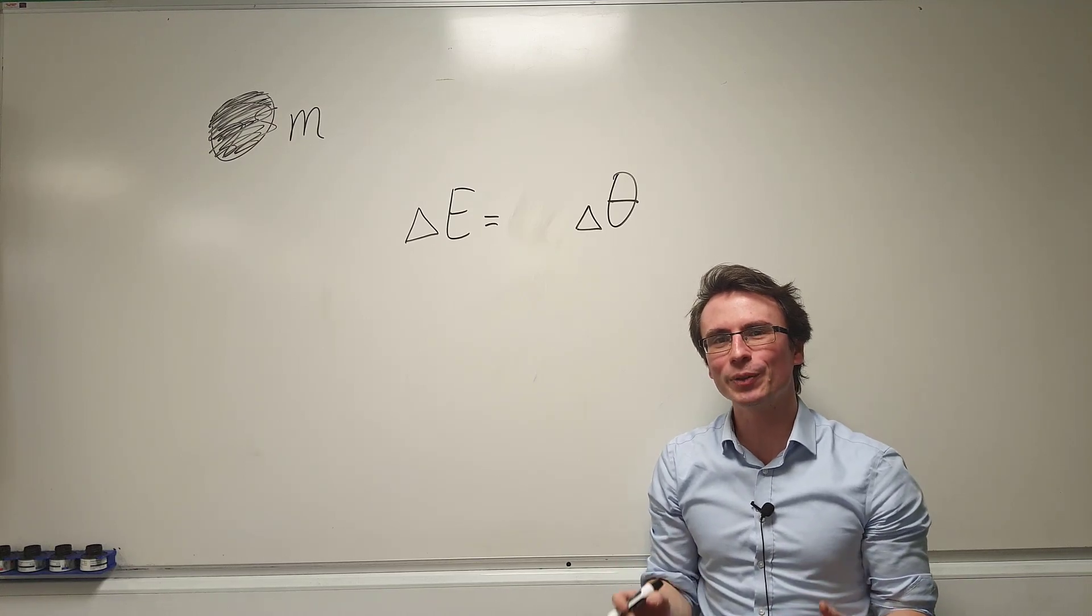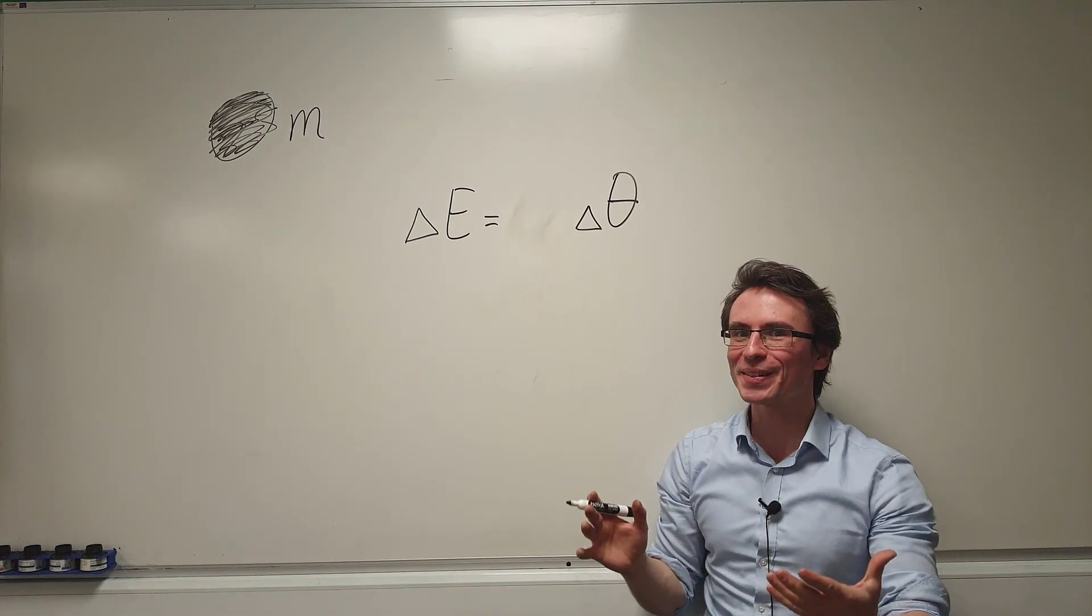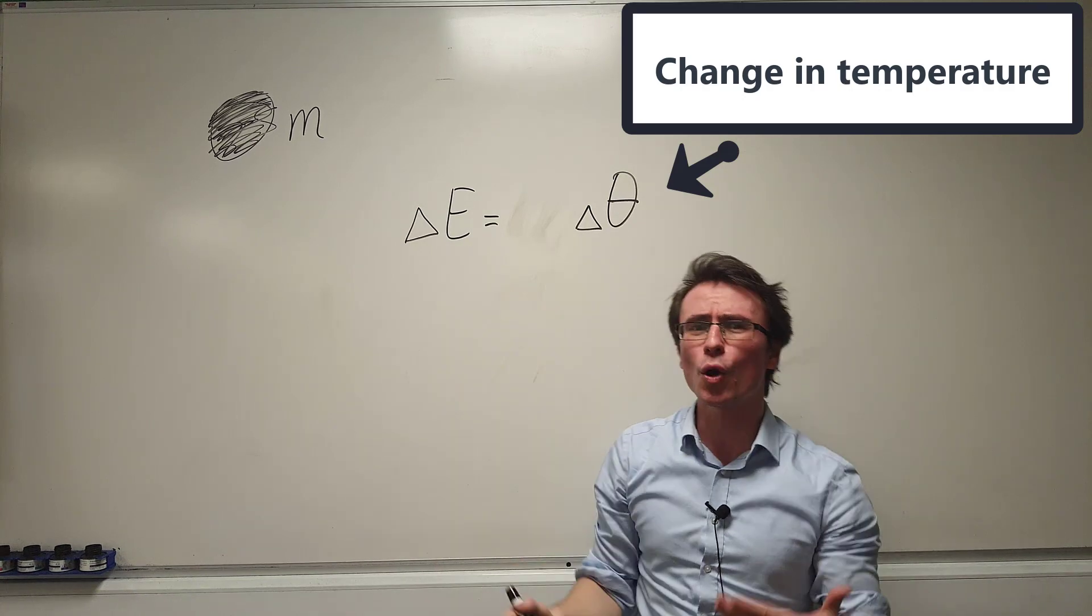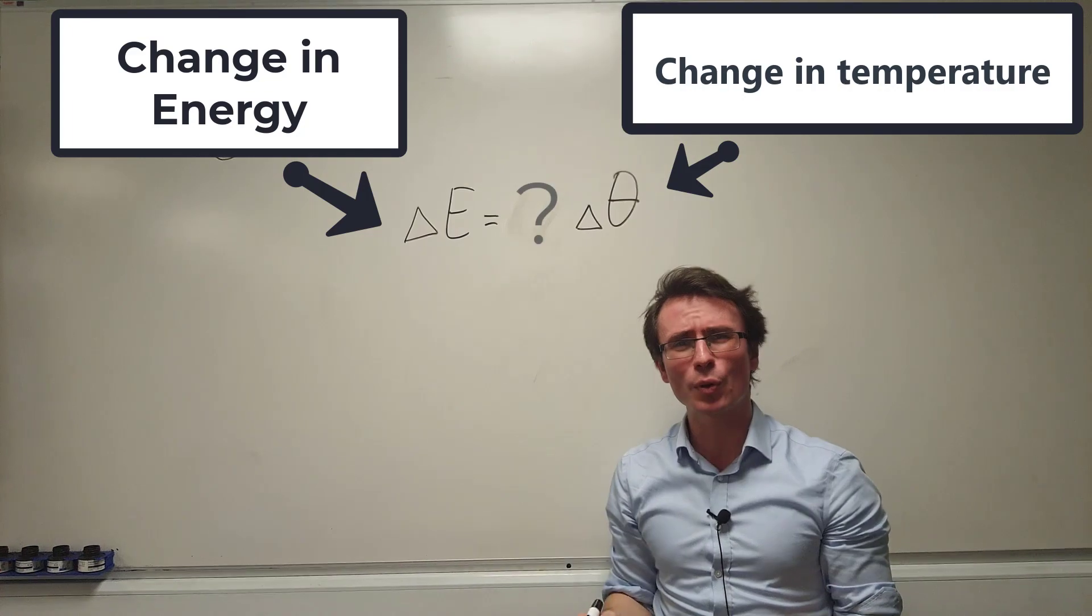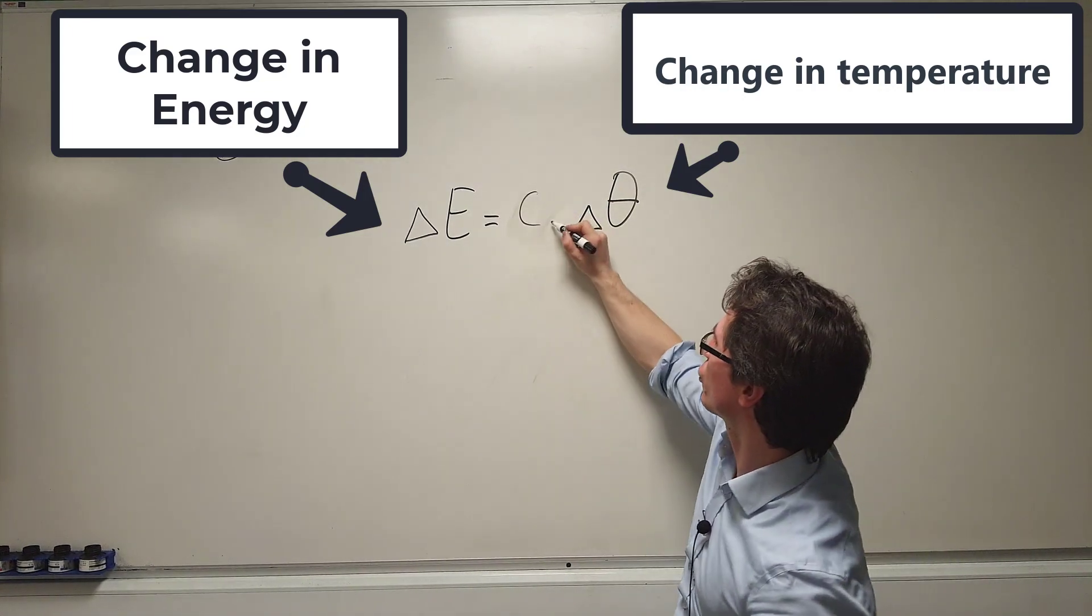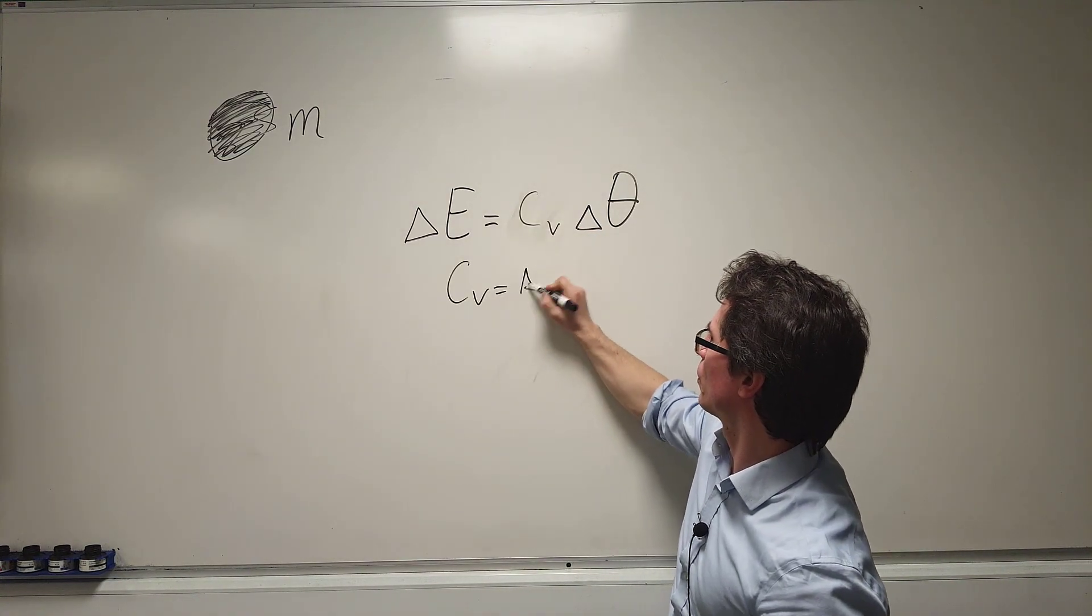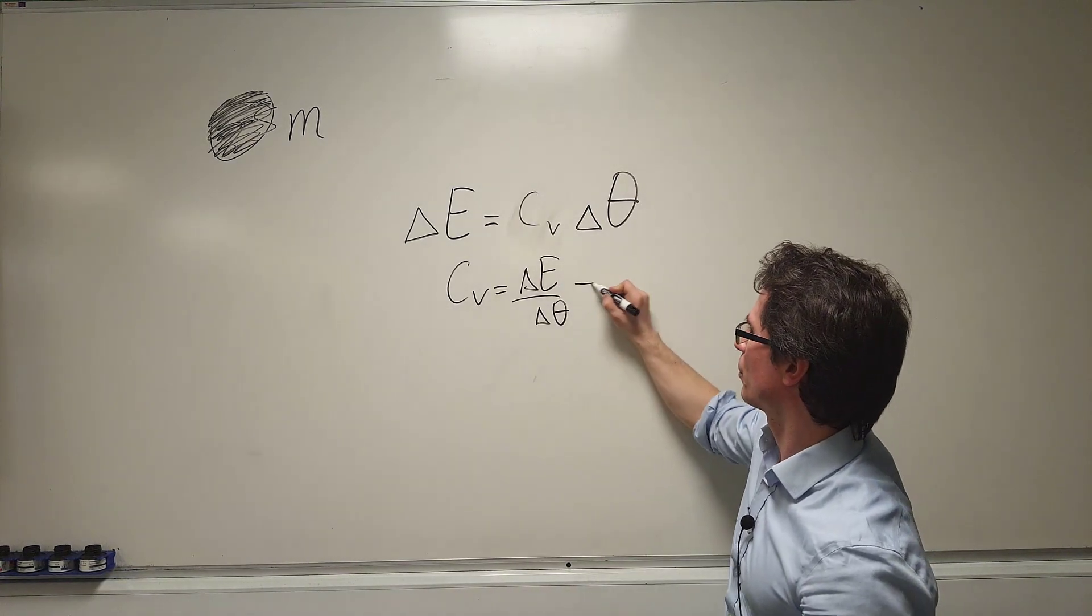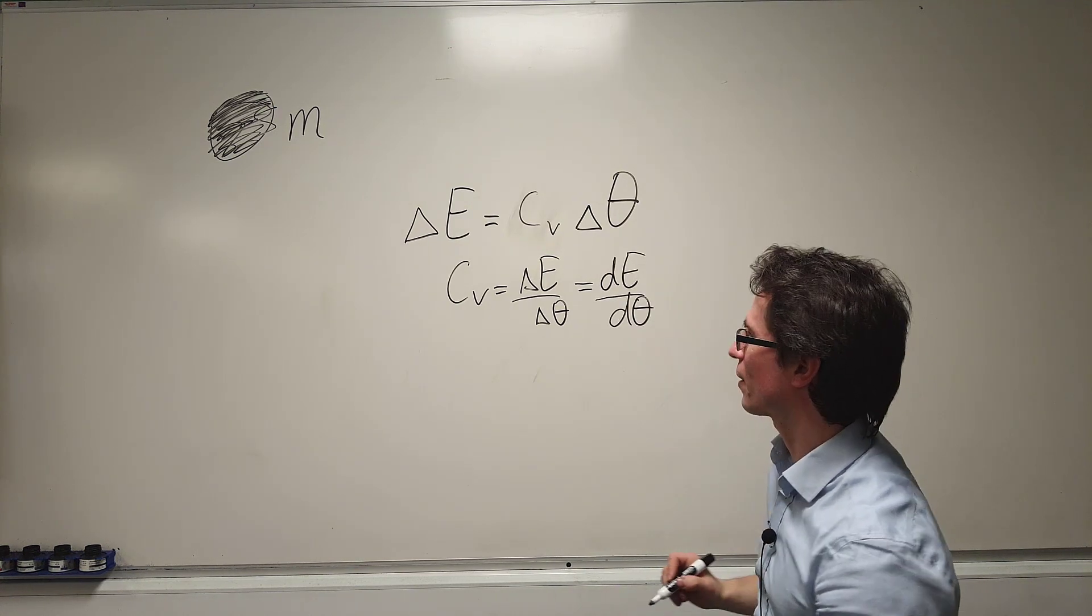When normal objects cool down they also lose energy. Let's say that you have an object that's lost an amount delta theta in temperature. This means there's going to be a corresponding energy that's been lost delta E. The coefficient between them is known as the heat capacity of an object and is typically given the symbol C subscript V. Rearranging for that we get that CV is equal to delta E delta theta and just by taking the limit of that we know that this will be equal to dE by d theta.